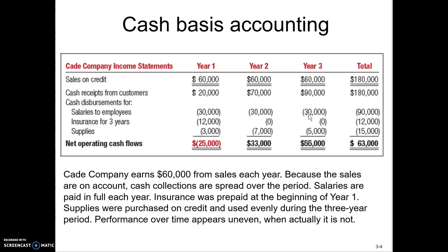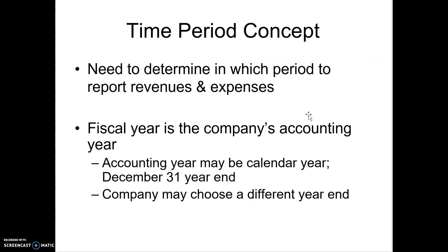That's why the accrual basis of accounting is what GAAP tells you to do. A couple of other concepts that play into the rationale for adjusting entries is the time period concept. We do our financial reporting for a period of time — monthly statements, but the big reporting is the annual statement. The company has a fiscal year. We typically think of the year beginning January 1st and going through December 31st, and a lot of companies have that same calendar year.